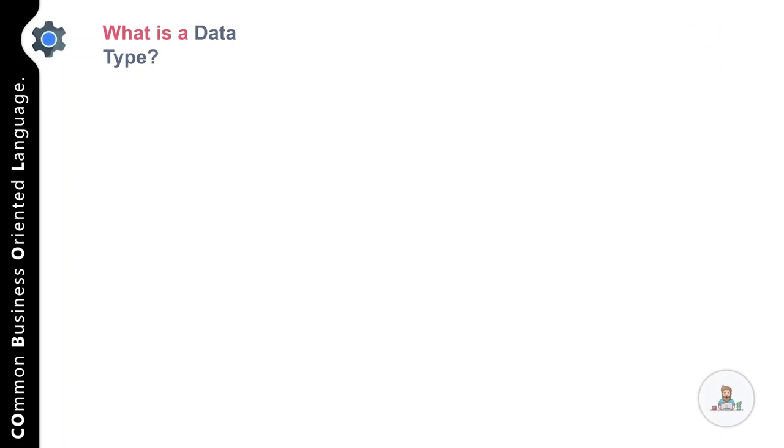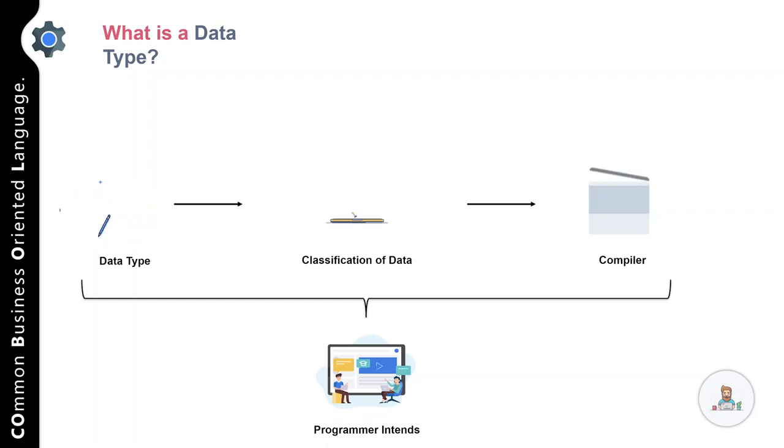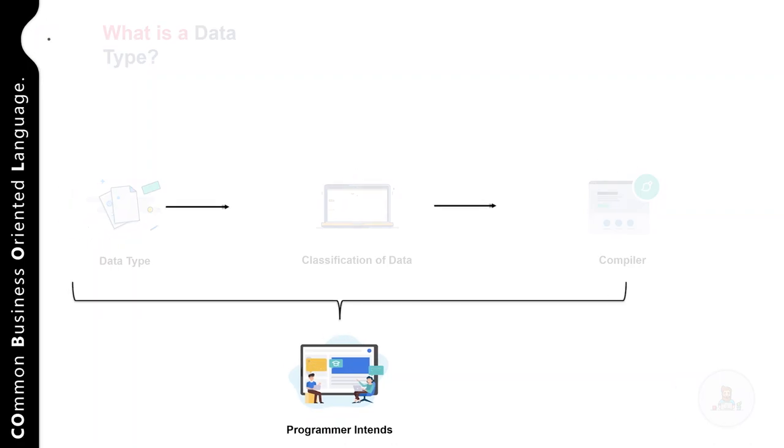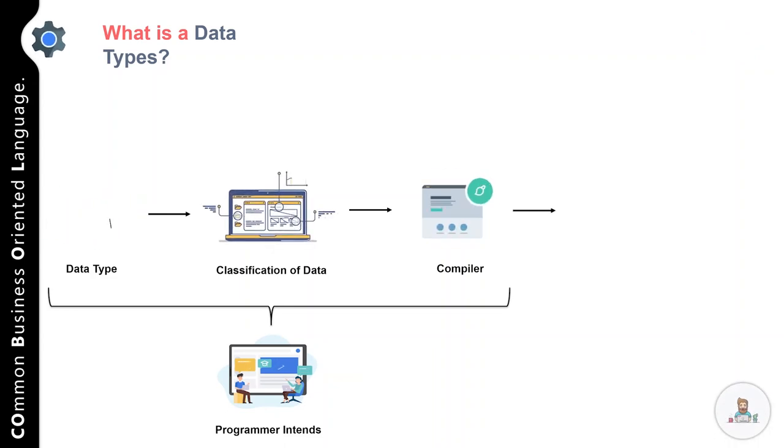Before we deep dive into the classification, let's talk about the term data type. In layman terms, a data type is a classification of data which tells the compiler how the programmer intends to use the data.